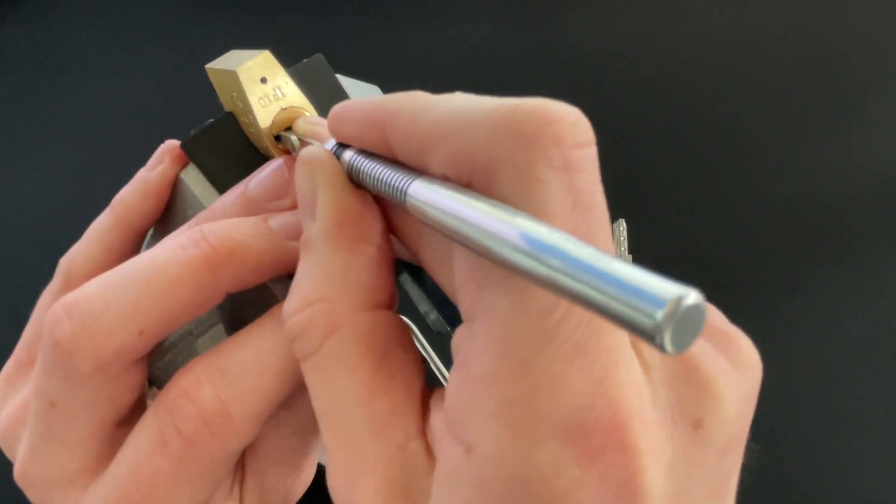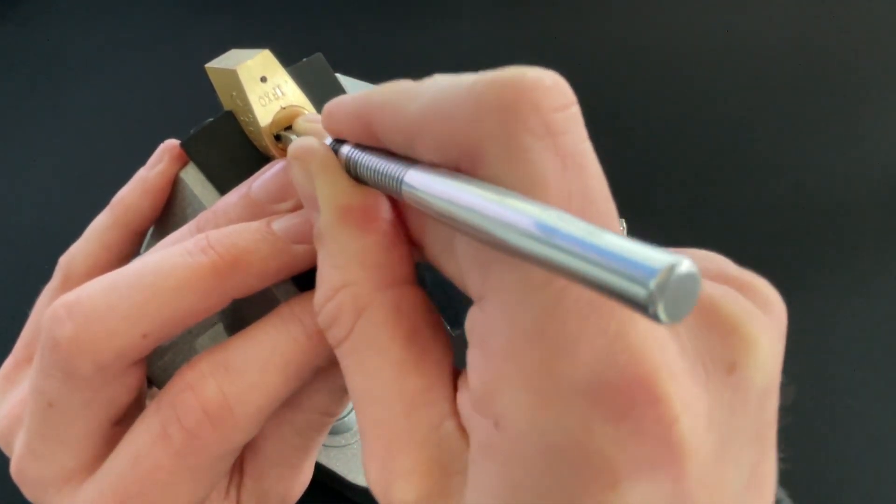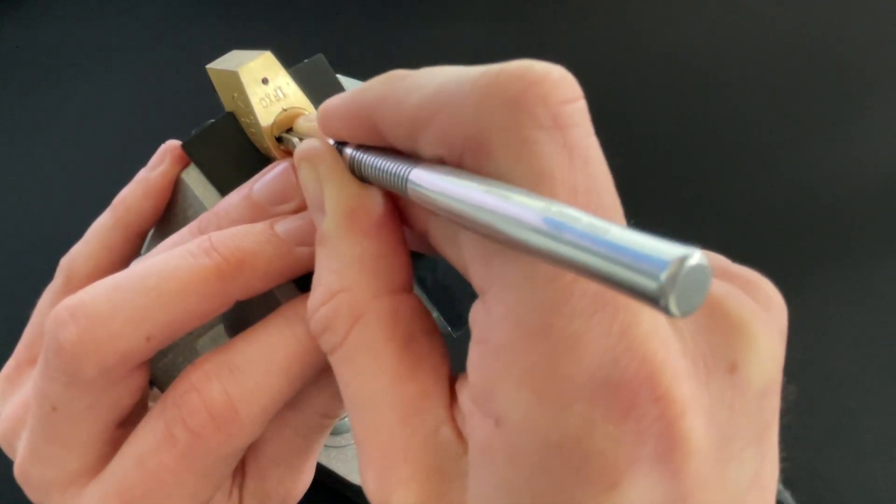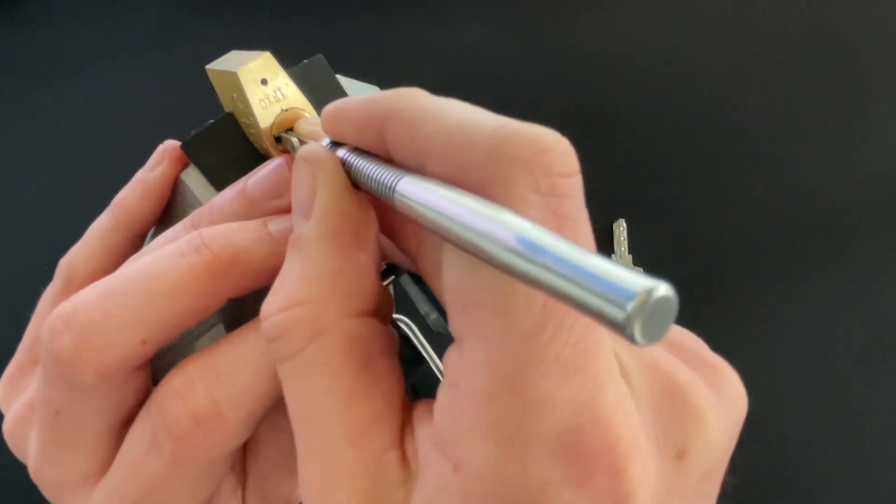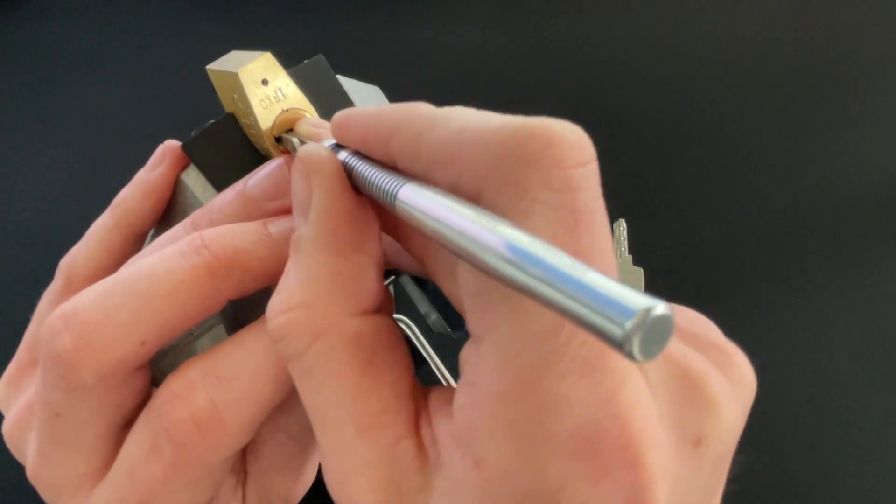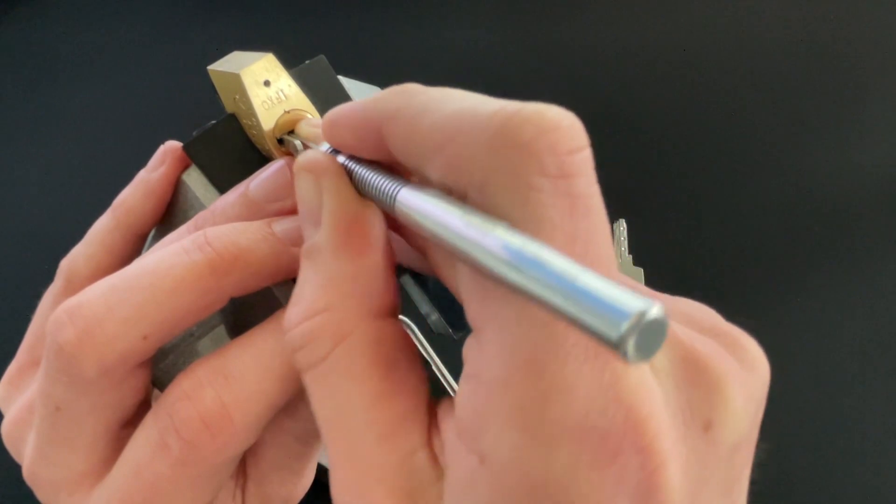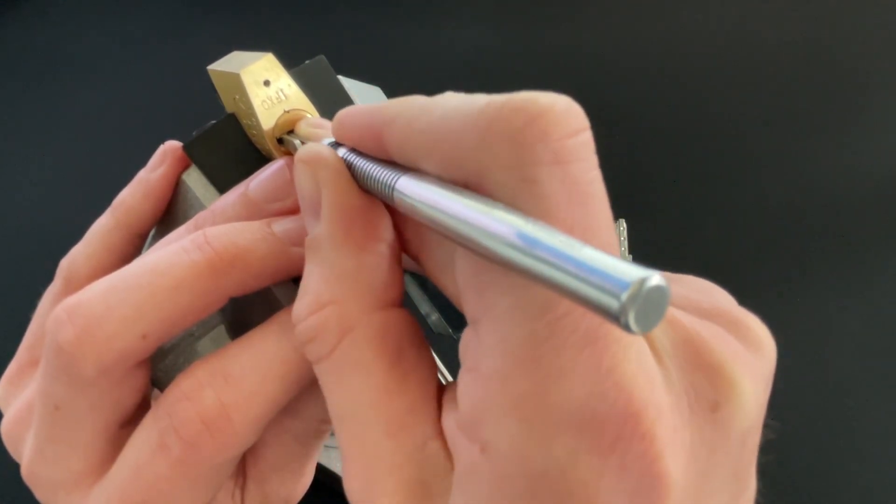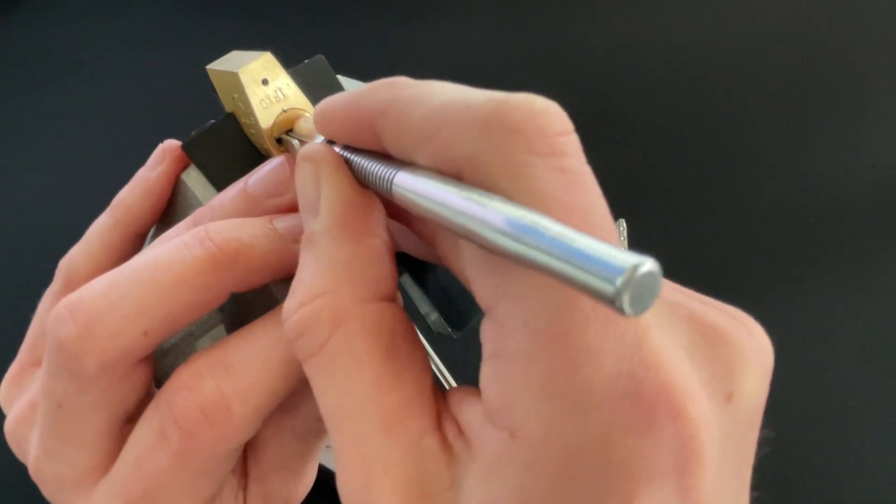Let's see three. Three is binding. We lost our false set. And we're back again. Just a little tap on three got us the false set back. Four. I think four isn't binding. Oh, there's a click, but we lost our false set.